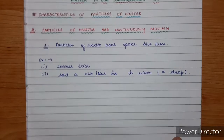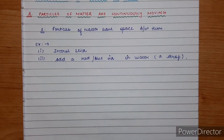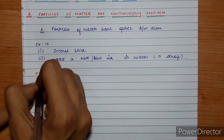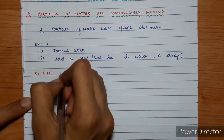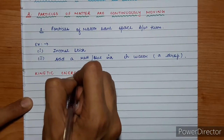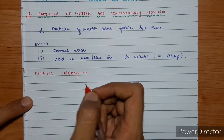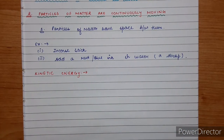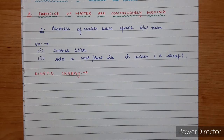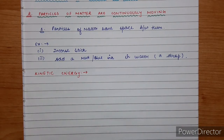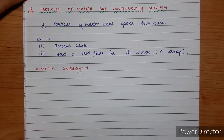अब इसके बाद आपको एक और term इस lecture में सीखने की बहुत जरूरत है — और वो है kinetic energy। यह term basically physics में use होती है, but chemistry में सिर्फ यह ध्यान रखो कि जब भी कोई particle move करता है तो वो जो energy उस time possess करता है, वो होती है kinetic energy। कोई भी particle, even एक human being, कोई भी body, कोई भी object — जब भी move करता है तो उस time जो energy possess कर रहा होता है उसे हम कहते हैं kinetic energy। Let me write the definition of kinetic energy — it is very important।